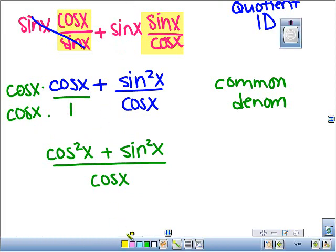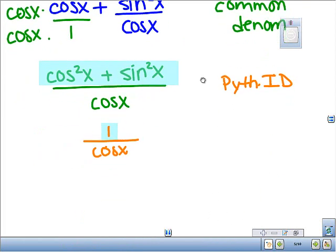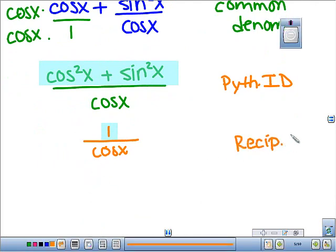Hopefully, this sticks out at you a little. Cosine squared plus sine squared is 1. So you have 1 over cosine of x. That's a Pythagorean ID. That's how I got there. Last but not least, 1 over cosine. That's your reciprocal ID. That is secant. And that's what I was trying to prove.